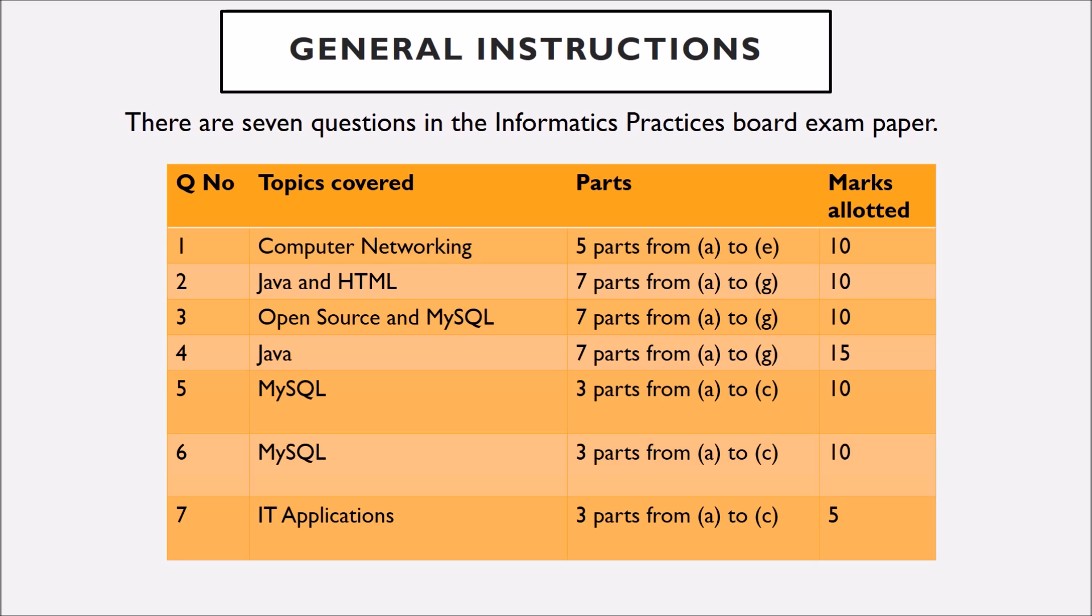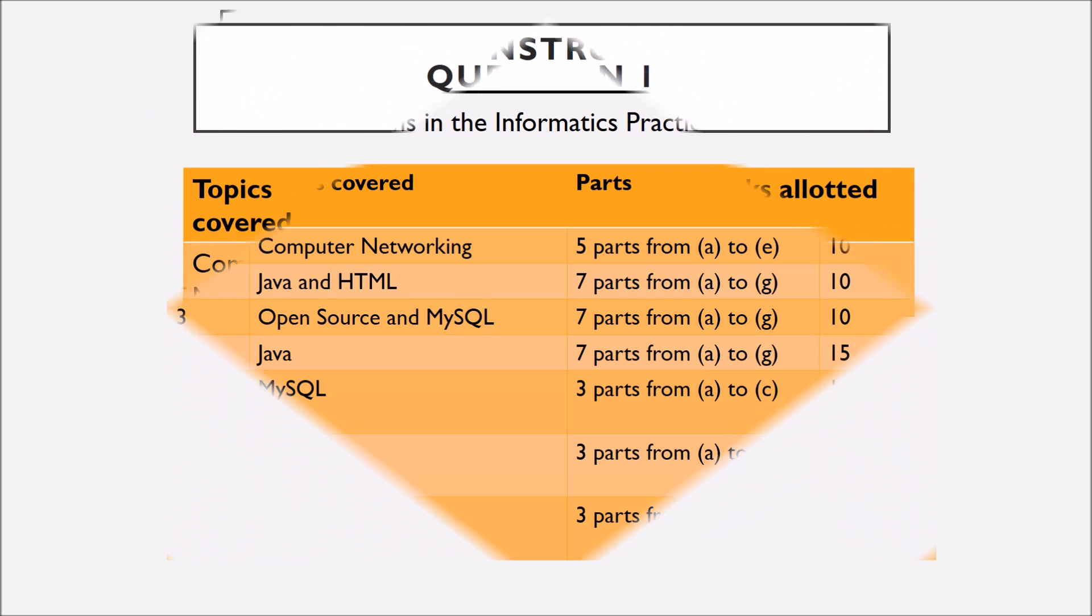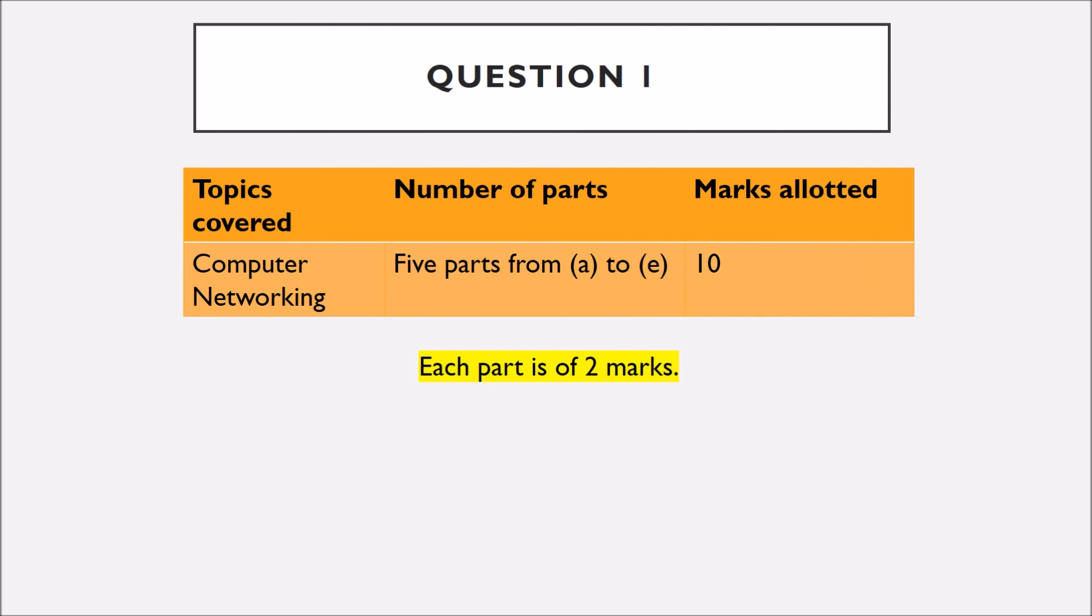Question number four is based on Java. It has seven parts from A to G and is of 15 marks. Question number five and six are based on MySQL. Both of them have three parts from A to C and are of 10 marks each. Question number seven is based on the topic IT applications. It has three parts from A to C and is of five marks.